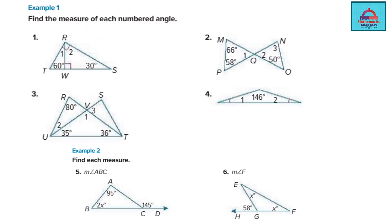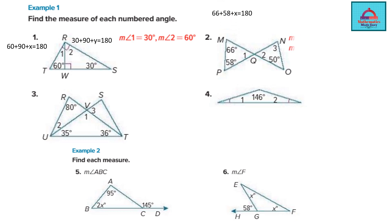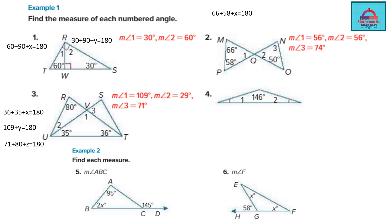Let's check the correct final answers. Question 1: angle 1 = 30°, angle 2 = 60°. Question 2: angle 1 = 56°, angle 2 = 56° (equal to angle 1), angle 3 = 74°. Question 3: angle 1 = 109°, angle 2 = 29°, angle 3 = 71°. Question 4: angle 1 = angle 2 = 17°. Question 5: angle x = 50°. Question 6: angle x = 58°. You may now check your answers using this answer key.